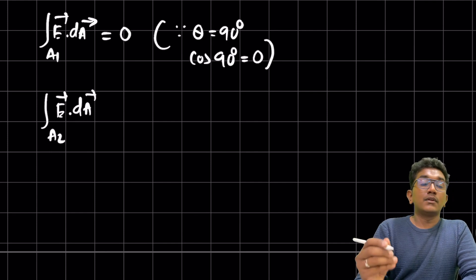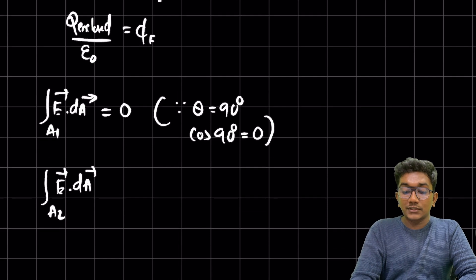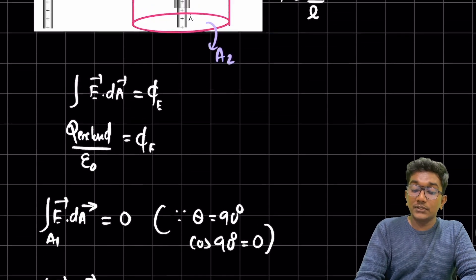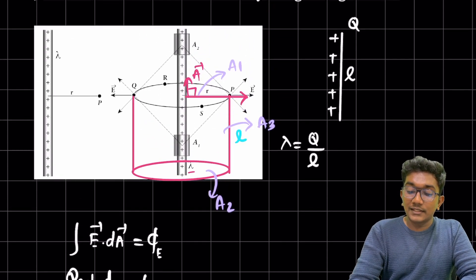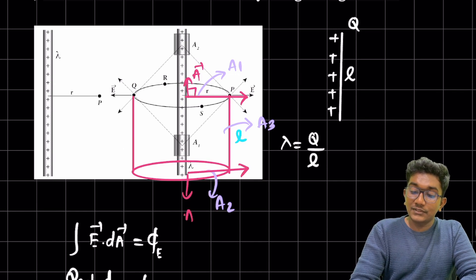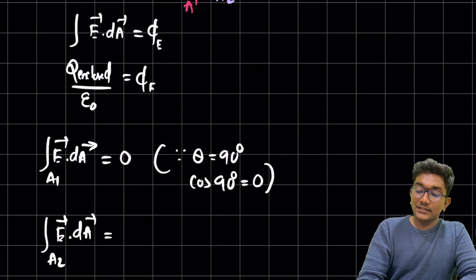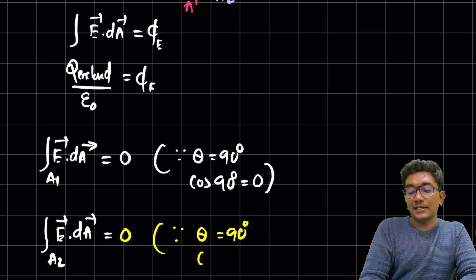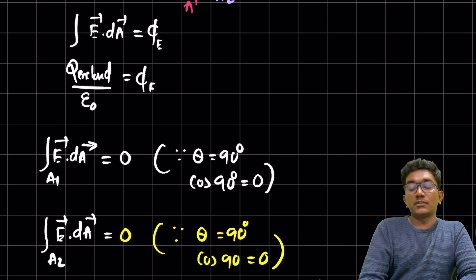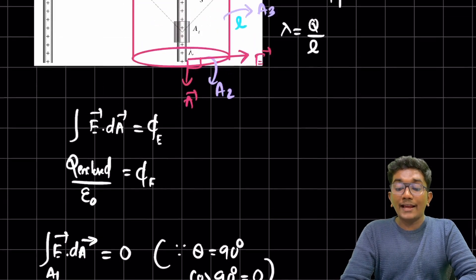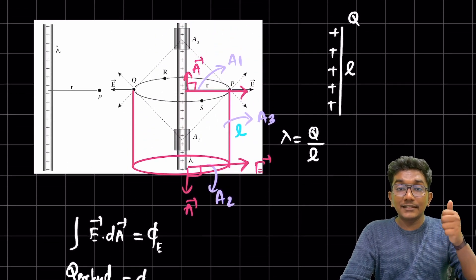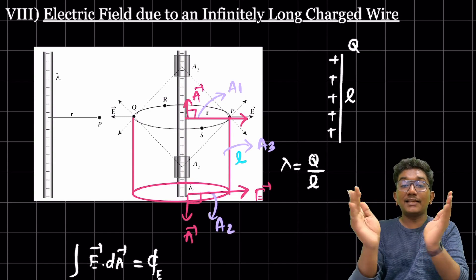Similarly, for surface A2 (the bottom face), the electric field is again in the radial direction and the area vector points axially, making the angle between them 90 degrees. Since cos 90° = 0, the integral of E dot dA for A2 is also zero.